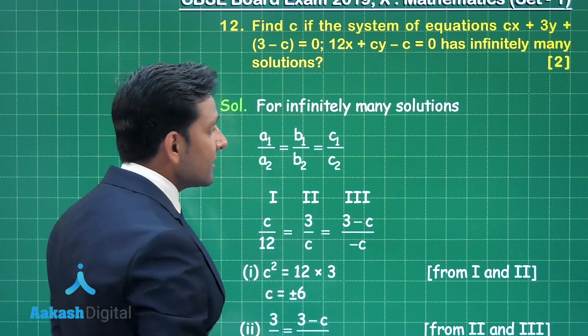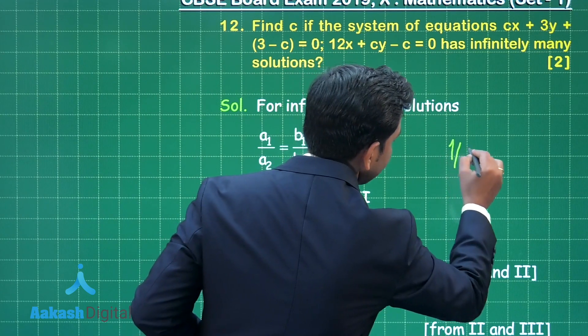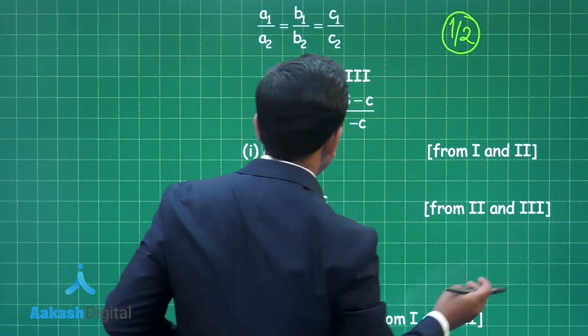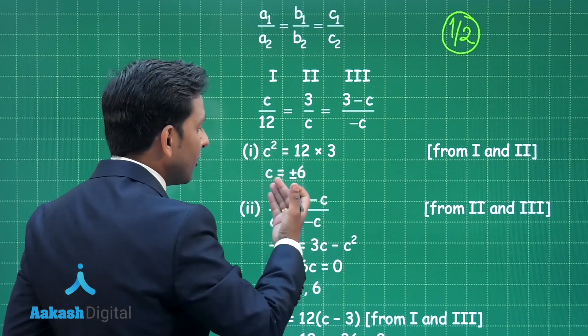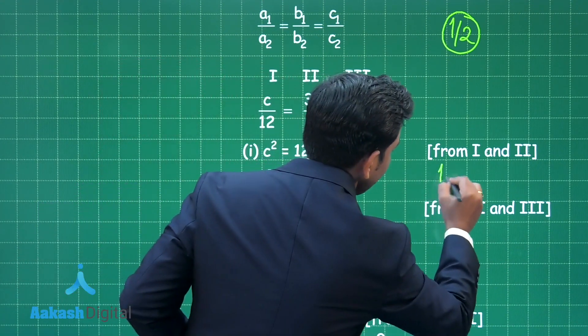Start from the beginning, so this important criteria, this important relation that will provide you the infinitely many solutions for these two equations will give you half mark. And when you take first and second ratio into the consideration, we are getting the value of C is equal to plus minus 6, this step will give you half a mark.